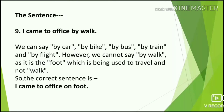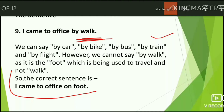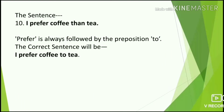Next: 'I came to office by walk.' We can say 'by car,' 'by bus,' 'by train,' 'by flight,' but we cannot say 'by walk.' Walk is an action, not a mode of transport. The correct sentence is: 'I came to office on foot.' We use 'on foot' for walking. Other transport modes use 'by' — by car, by bike, by bus, by train.